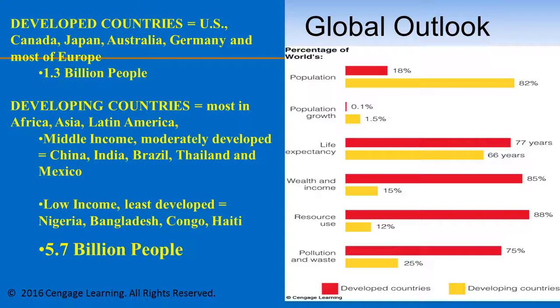This graphic depicts the differences between developed and developing countries in relation to population numbers, population growth, wealth and income, greenhouse gas emissions, pollution and waste, as well as life expectancy. The developed countries are depicted by the red bar, and the developing countries are depicted by the yellow bar in the graphic.